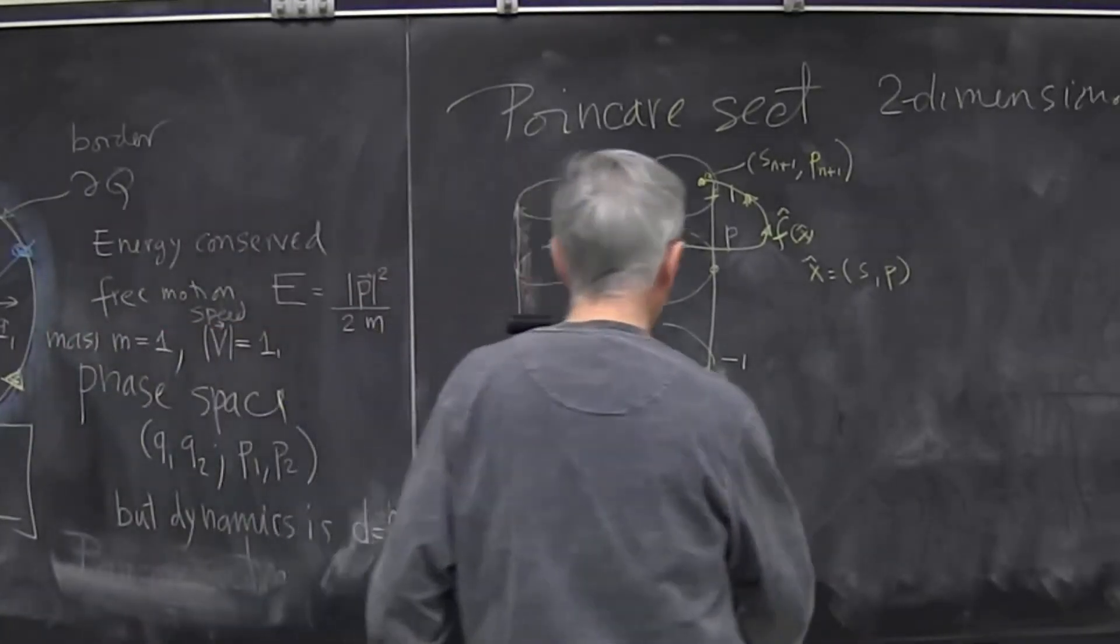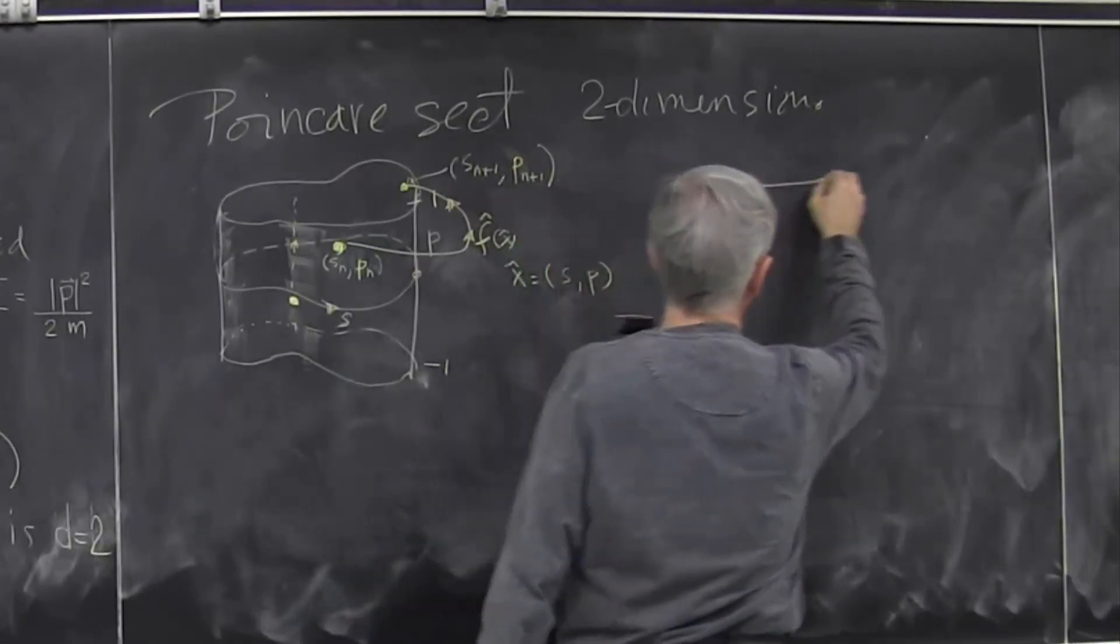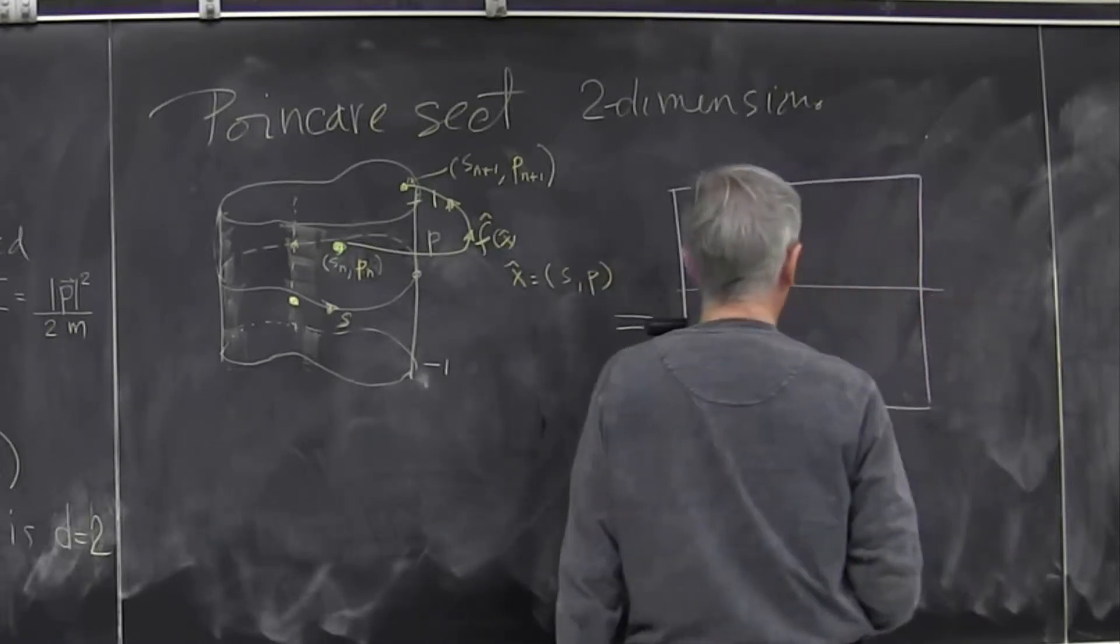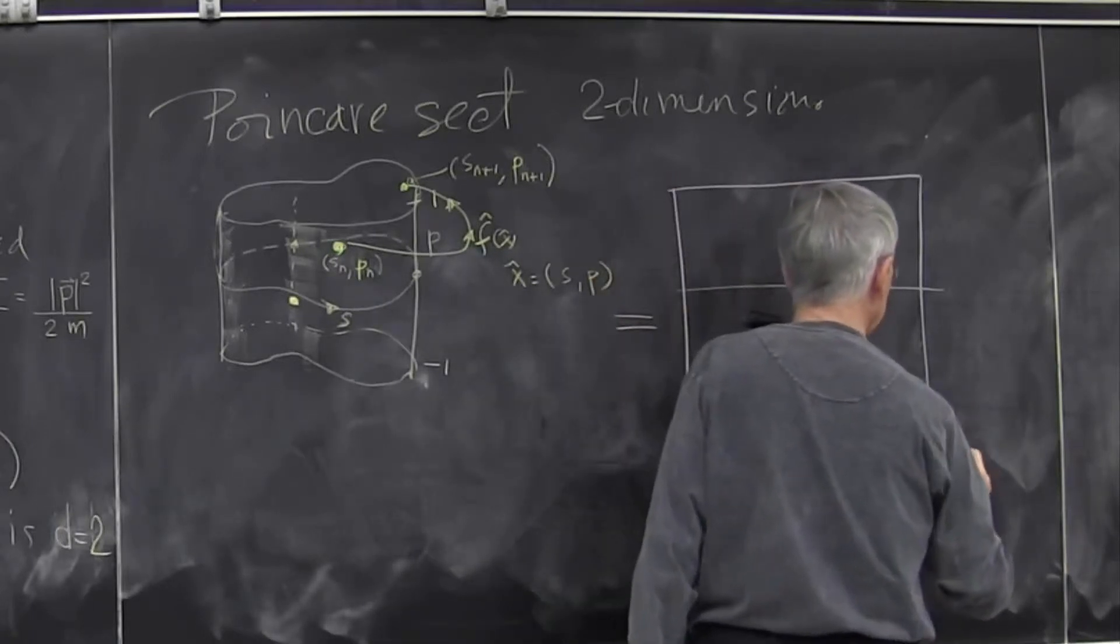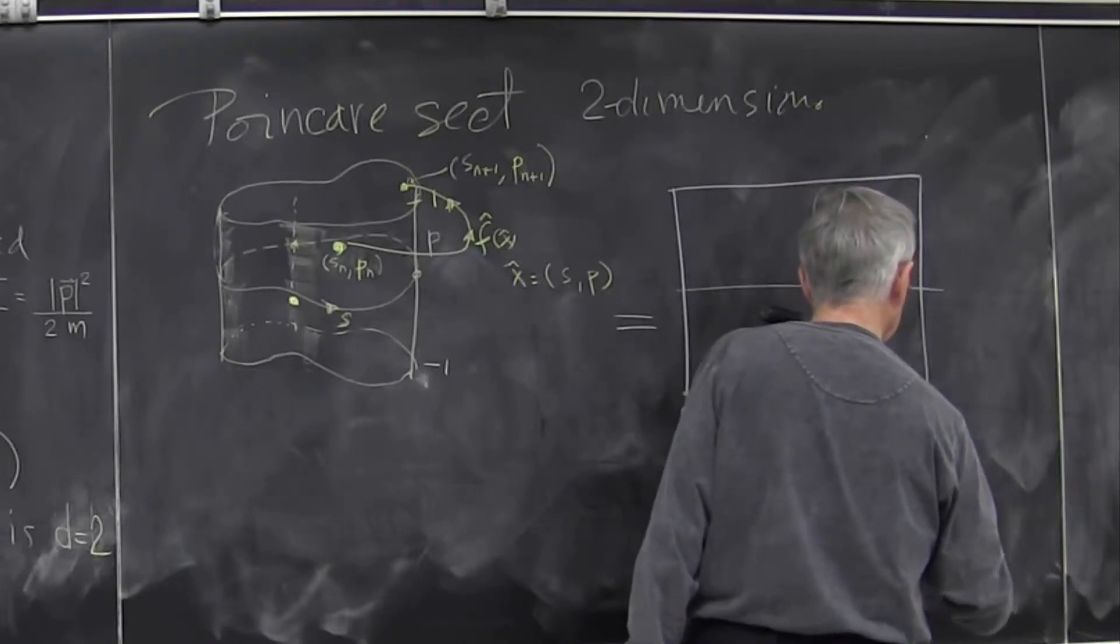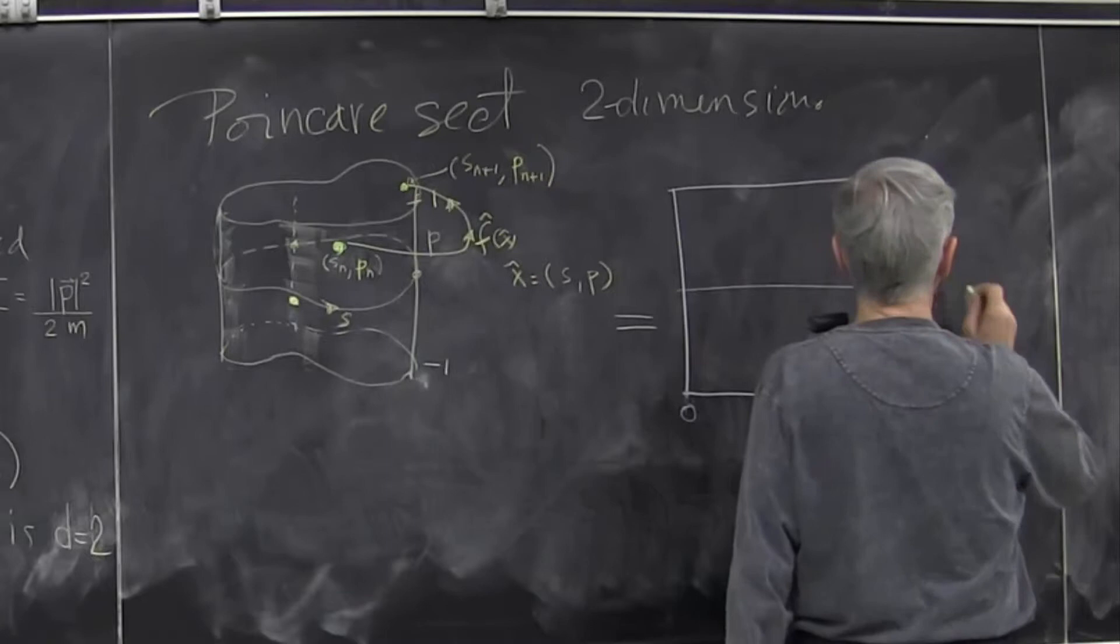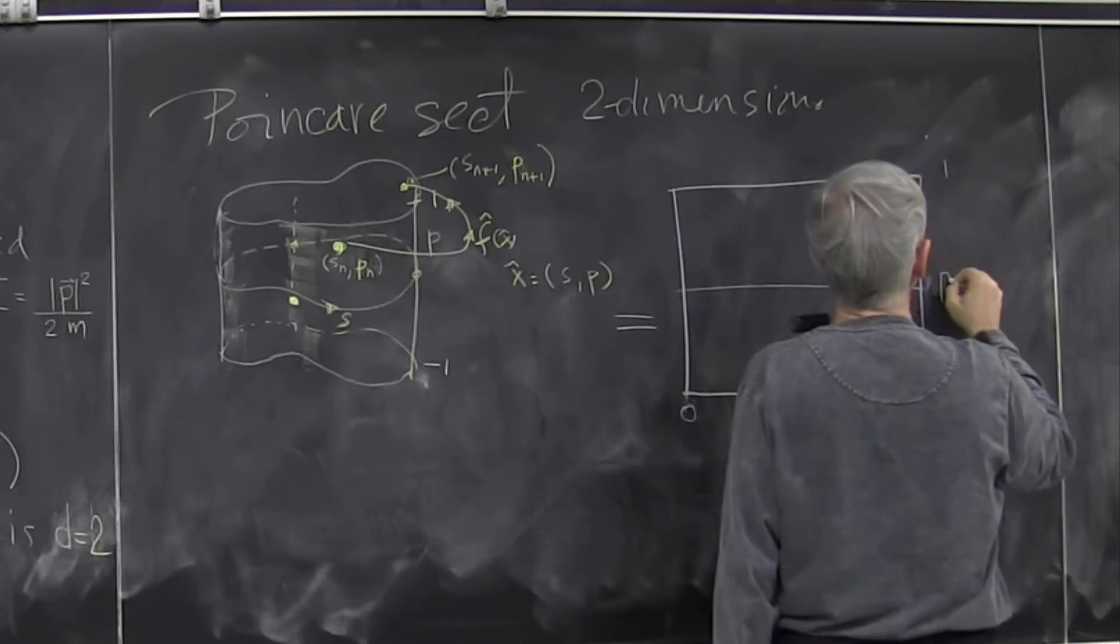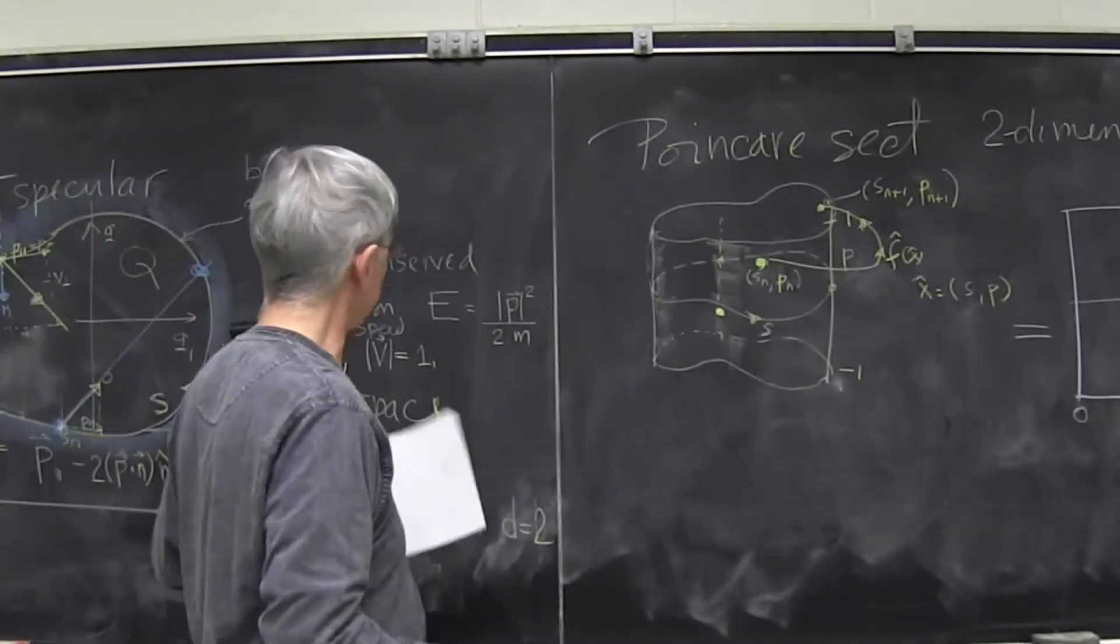Of course, when we really do this, we don't draw this picture, but we actually just draw a rectangle, which has coordinate S going from 0 to the length of the perimeter. So this is length. If you wish, L is the length of the perimeter. And here we have minus 1 to 1 for the parallel momentum. So we just draw it as a little rectangle. And then we study the dynamics.